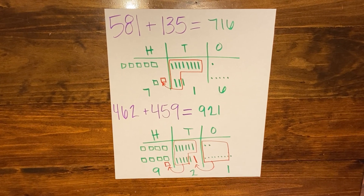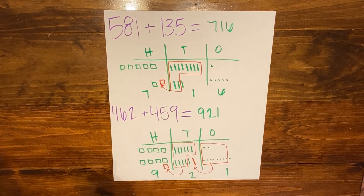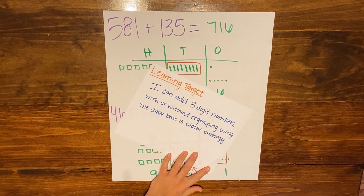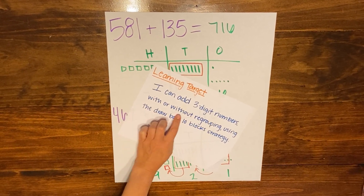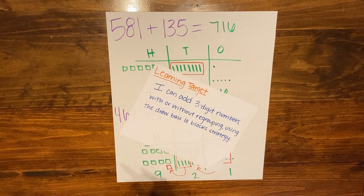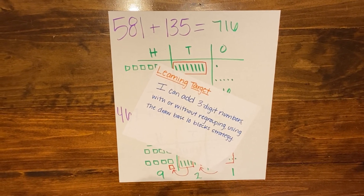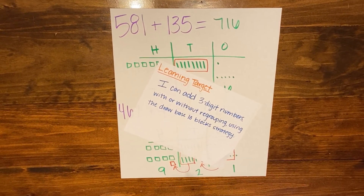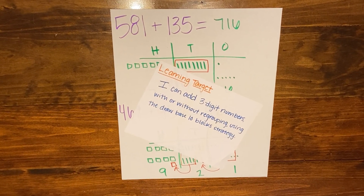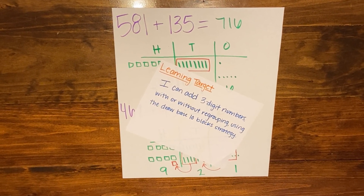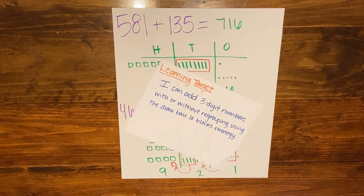Just to review, we're going to look back at our learning target from the beginning of the lesson: I can add three-digit numbers with or without regrouping using the drawing base 10 block strategy. Now you're going to try some on your own. If you need extra support, please watch the video again and stop and rewatch as needed. If you still need support, please reach out to your teacher.